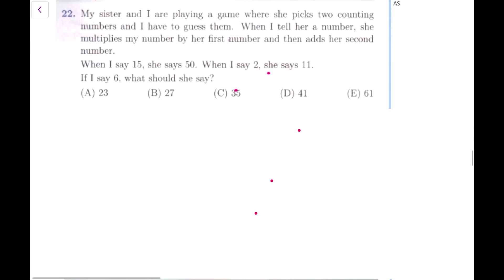Let's have a look at question number 22. My sister and I are playing a game where she picks 2 counting numbers, and I have to guess them. When I tell her a number, she multiplies my number by her first number, and then adds her second number. When I say 15, she says 50. When I say 2, she says 11. How is this happening? Let's lay it out and make a diagram for it.